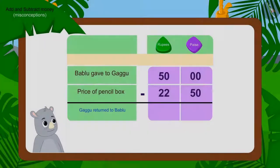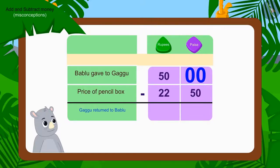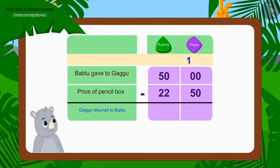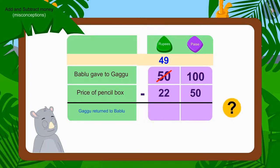Let's see. First, we will subtract the numbers written in paise. Oh no! Can we deduct 50 paise out of 0 paise? No! So what shall we do now? We will use the borrowing process. We will borrow 1 rupee out of 50 rupees and write it as 100 paise. And since we have borrowed 1 rupee, we have to cut 50 rupees and write 49 rupees. Now, out of 100 paise, how much money is left after deducting 50 paise? 50 paise!